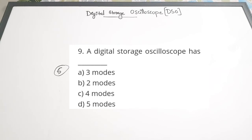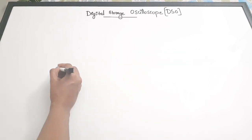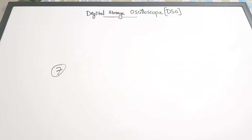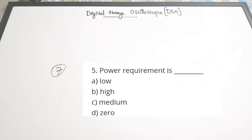Seventh question: For a DSO, the power requirement is - A - low, B - medium, C - high, D - zero. In a digital storage oscilloscope the power requirement is low. Correct answer is A - low power requirement. It can be supplied with the help of a small battery.